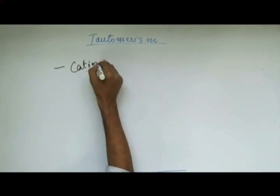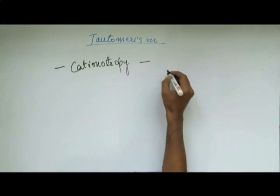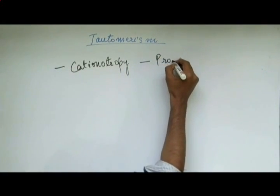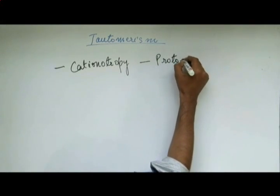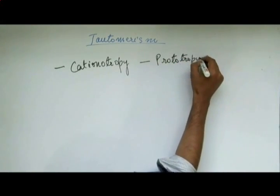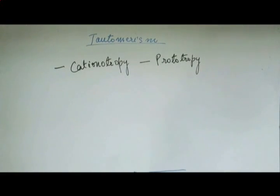Tautomerism is also called cationotropy or prototropy. Cationotropy means movement of cation. Prototropy means movement of a proton, that is H+. Mostly the kind of tautomerism we deal with is prototropy, the movement of H+. We are going to see how H+ moves from one atom to another.